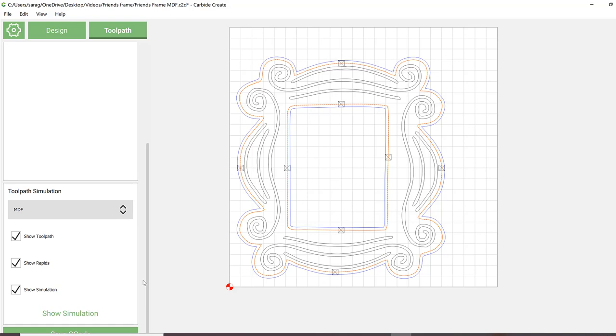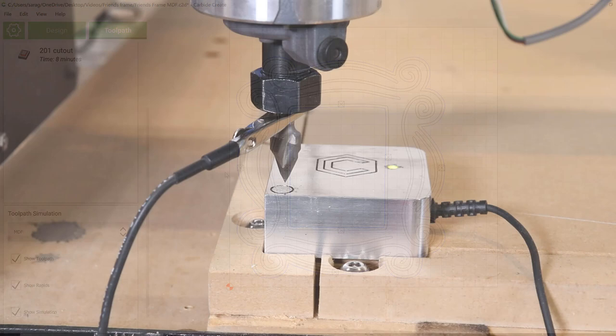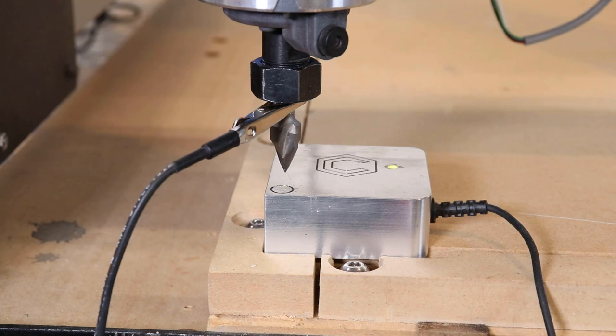I previously found my X and Y zero, so I used the bit zero to accurately find my material Z. Since it is my first time cutting this design, I decided to set my Z zero three millimeters above the material Z that was previously found with the bit zero, just to be safe.